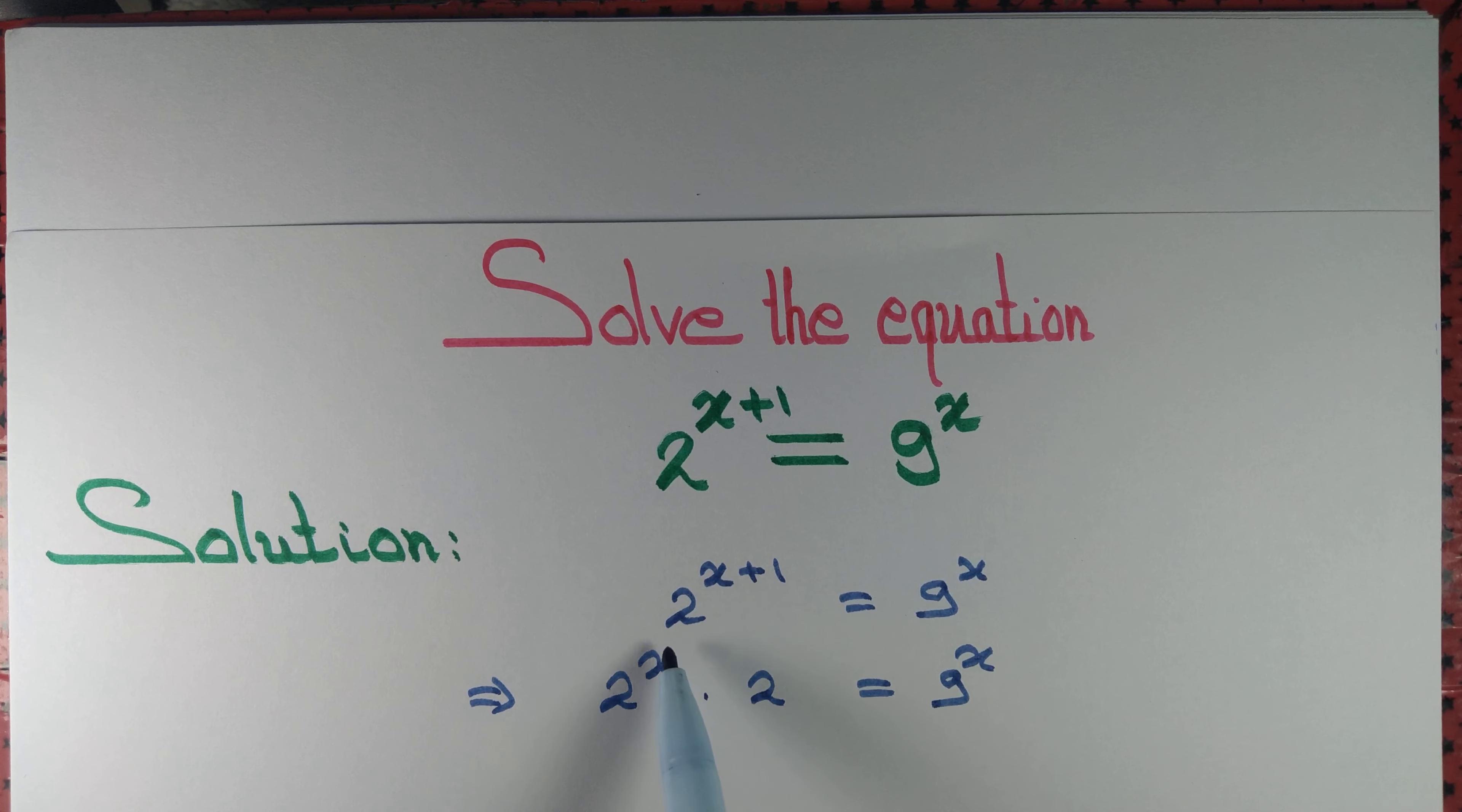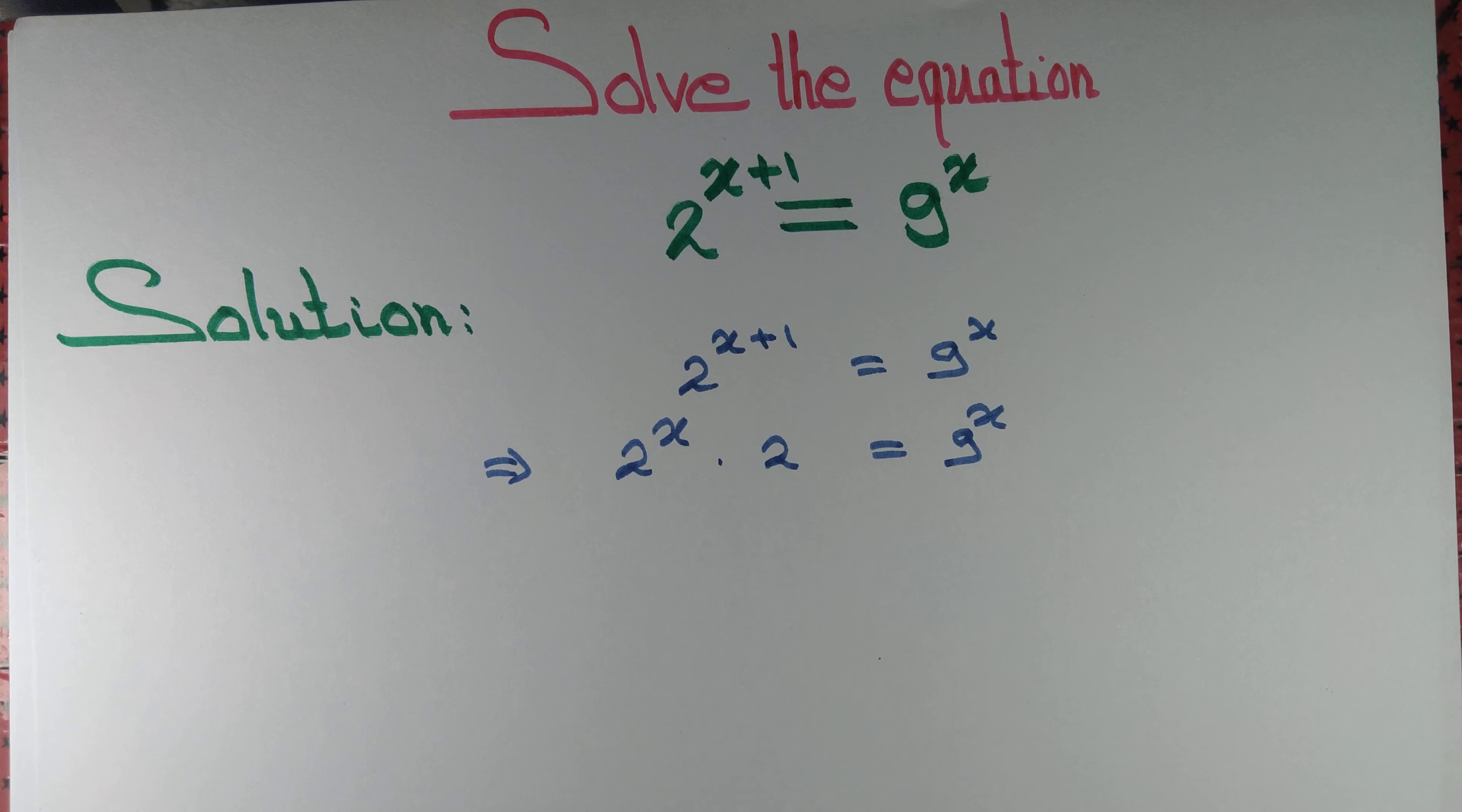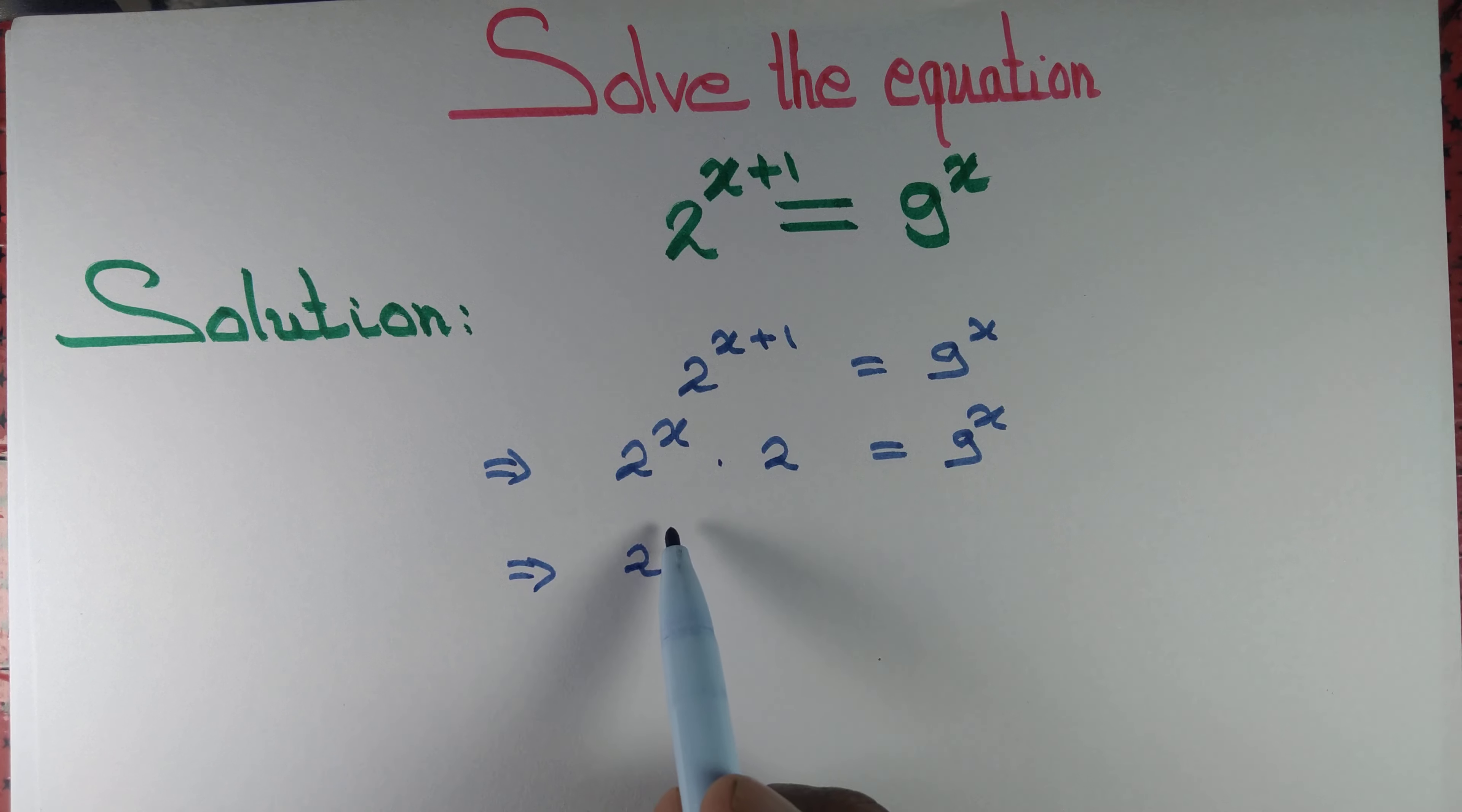Let's take this quantity 2 to the power x to the right hand side. So 2 equal to 9 by 2 to the power x.